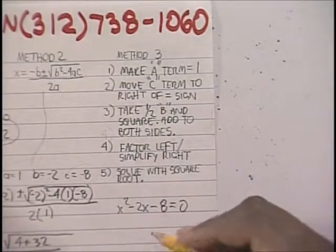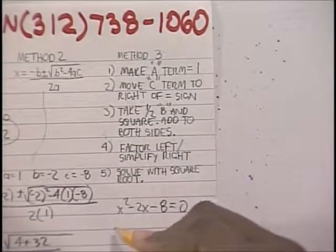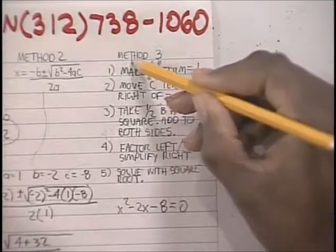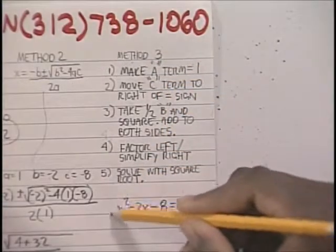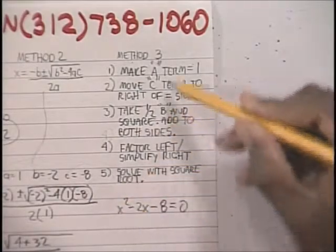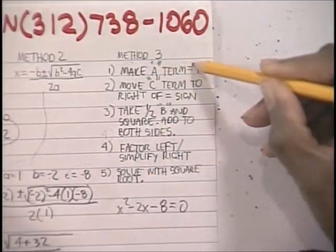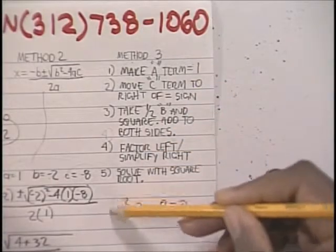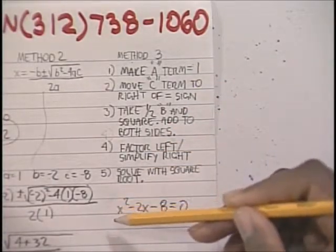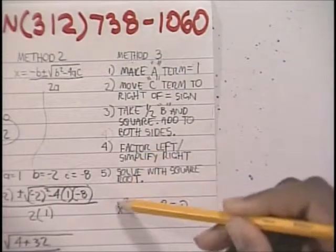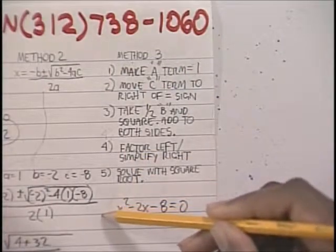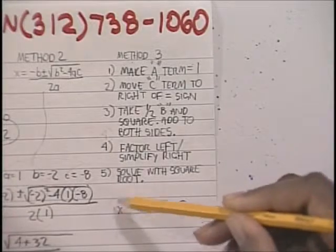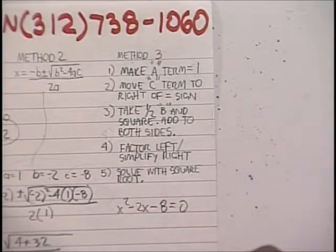So now to complete the square, we're going to take the a term—when I say a term, I mean this coefficient right here. Make sure that the a term is 1, and it turns out it already is. So there's nothing you have to do for this first step. If this were a 2 or a 3, you'd have to divide the entire equation by 2 or 3. Because it's 1, we don't have to do anything.